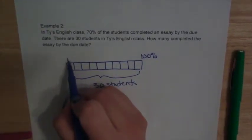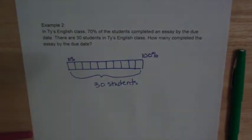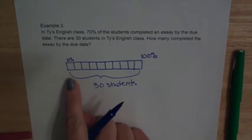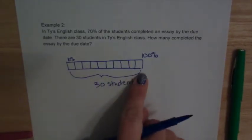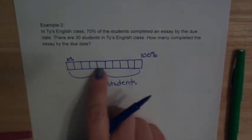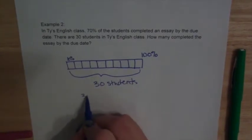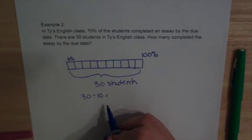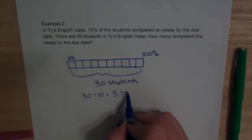Alright, so each one of these boxes represents 10%. So we need to figure out how many students one of these boxes would represent. So if I have 30 students, and I break that into 10 boxes, do 30 divided by 10, and we get 3 students.